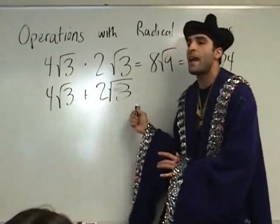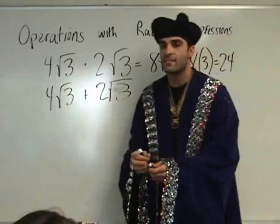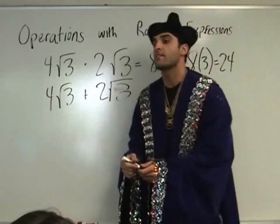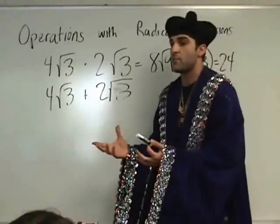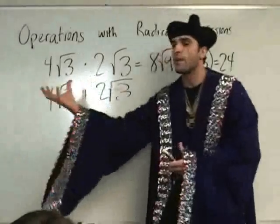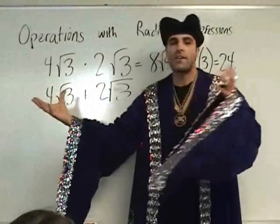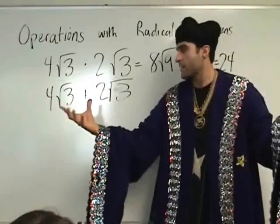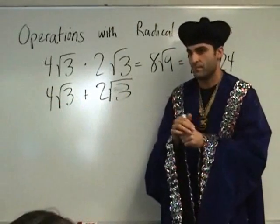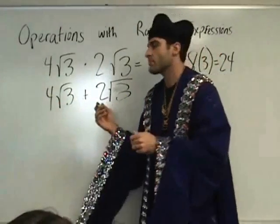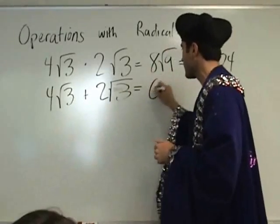Four root three plus two root three — how many root threes do we have? Six. To the square root of six? No. Don't change what you have. In one hand I have four root threes, the other hand I have two root threes, together I have six root threes. So the square root does not change. That is the conclusion.